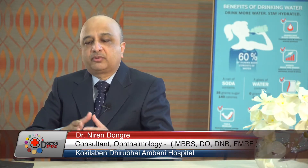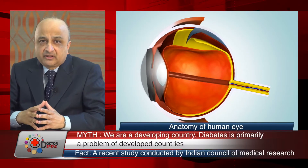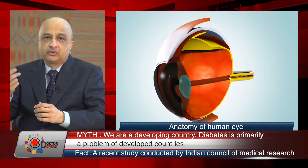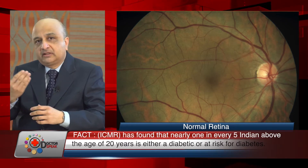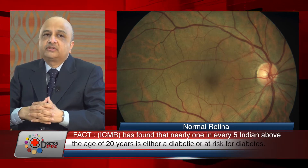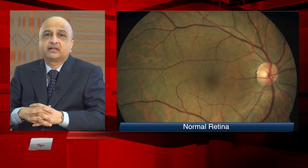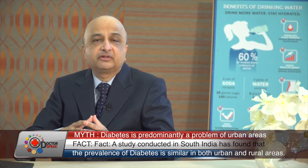Talking about retinal diseases, any age group right from the newborn to as old as 90 can get affected. So what is the retina? Retina is the back portion of the eye — like in our olden cameras, there used to be a film at the back. Similarly, the back of our eye has a thin layer of nerves which takes images to the brain, and that is how we see.